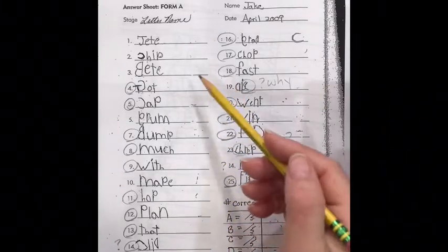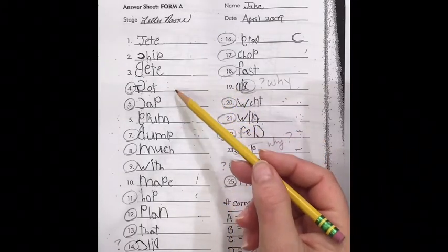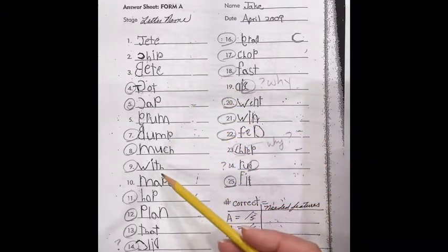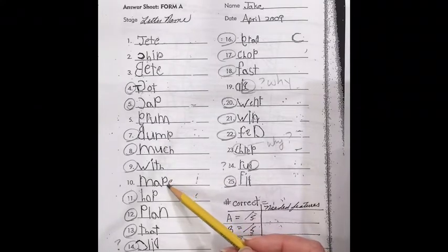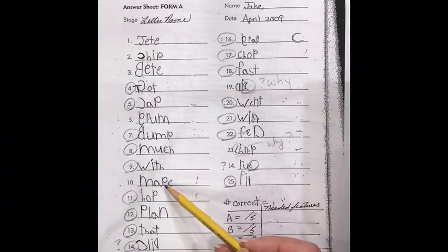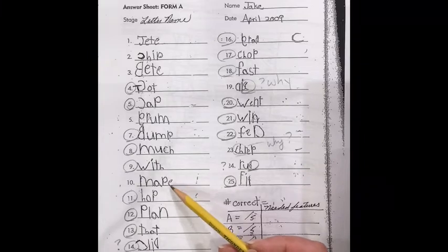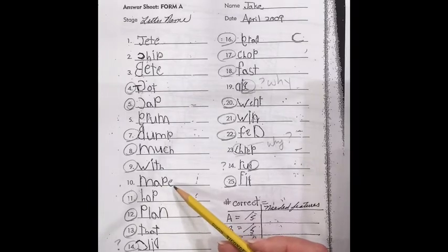Let me talk about a couple of common confusions. So in the word map, this is the word map, and he has all the letters for map, but when he adds the E, that changes this word. So you can't count this word as correct as it is. It is not the word map.